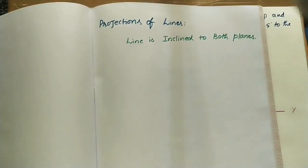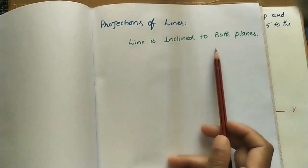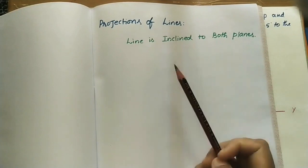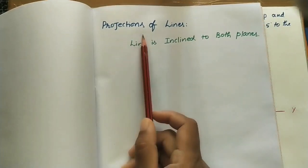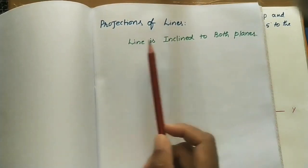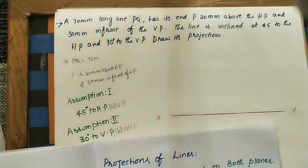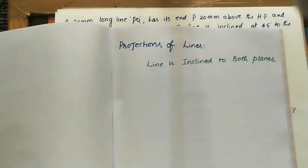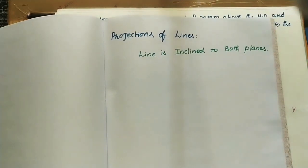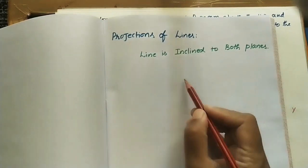Welcome to my channel. Today's topic is projections of lines — specifically a line inclined to both planes, meaning both the horizontal plane (HP) and the vertical plane (VP). Projections means the front view and top view of a given line. Before taking the data, I want to explain the line's position — how it looks when making angles with both planes. This line is in the first quadrant.